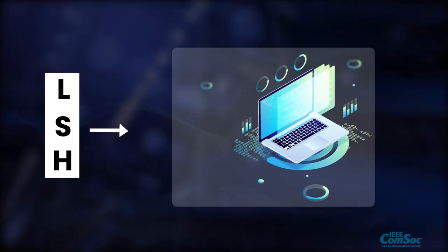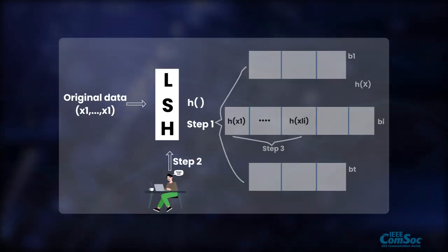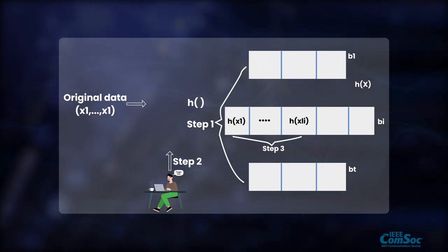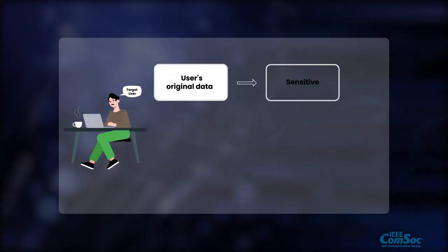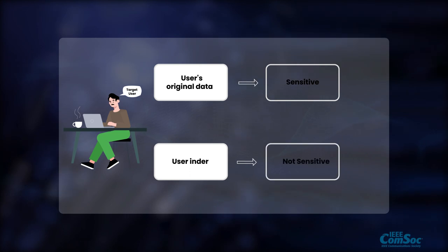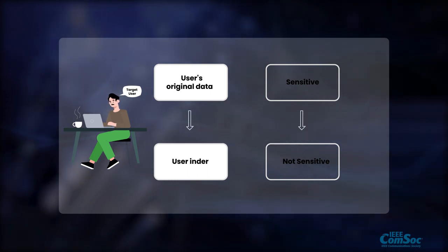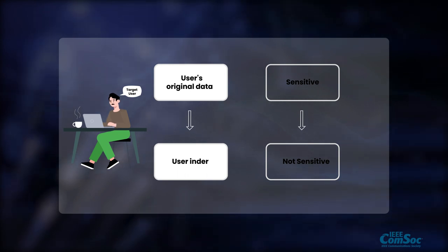When LSH technique is applied in the data prediction field, user data actually plays the role as original data which is sent to LSH function and gets hashed to users' index. In this process, users' data is sensitive, but users' index is not sensitive. In this way, we protect users' privacy through locality-sensitive hashing technique. And in further calculation, we could use user index instead of user original data.